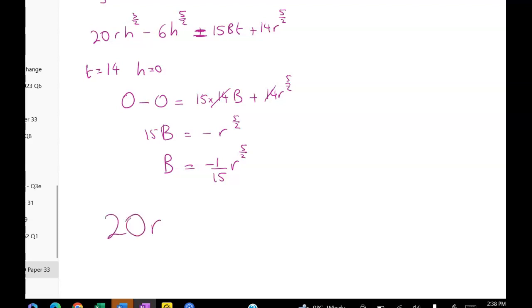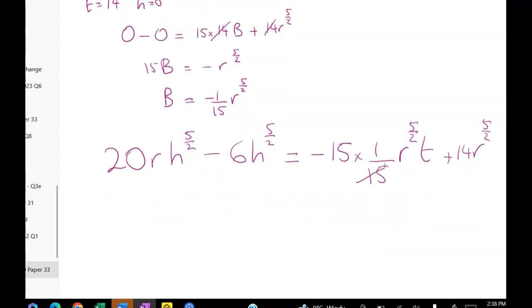So 20 R H to the five over two minus six H to the five over two is equal to negative, I'll go really slowly, negative 15 times one fifteenth R to the five over two T plus 14 R to the five over two. Yuck. These can go away. So first of all, before I do anything here, I'm just going to rearrange here.